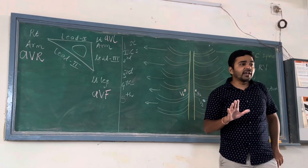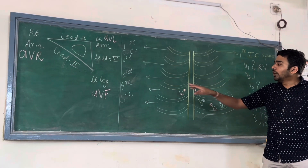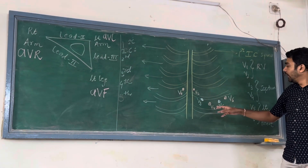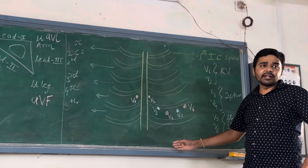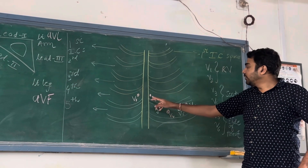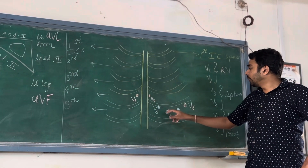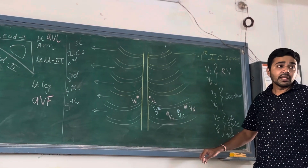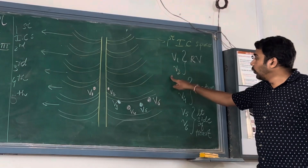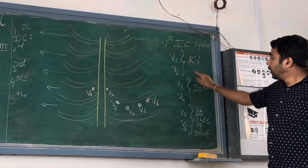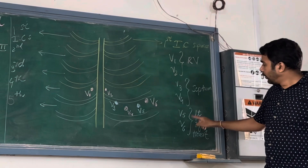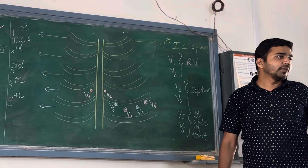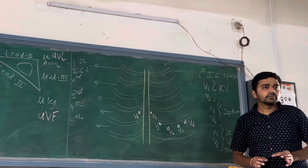Summary of chest leads: V1 and V2 are in the fourth intercostal space — V1 on the right side, V2 on the left side of sternum. V4 is on the mid-clavicular line. V3 is between V2 and V4. V6 is on the mid-axillary line. V5 is between V4 and V6. V1 and V2 record the right ventricle. V3 and V4 record the septum. V5 and V6 record the left side of the heart, mainly the left ventricle.